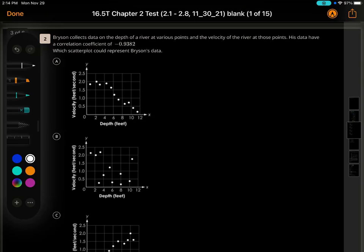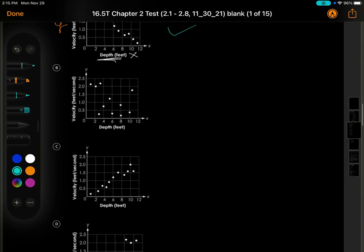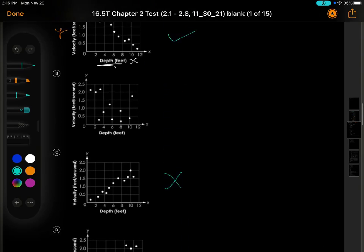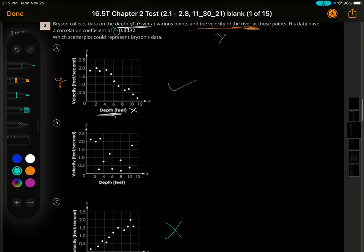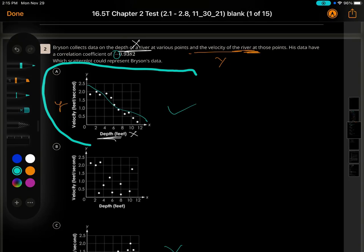Bryson collects data on the depth of the river at various points and the velocity of those points. I see depth, that's the x-axis, and then velocity is kind of like speed, so that would be y. His data has a correlation of negative, so going down left to right. This one looks negative, this is positive, positive. And it's pretty close to a negative 1, so this one looks like the right answer. Answer is A.